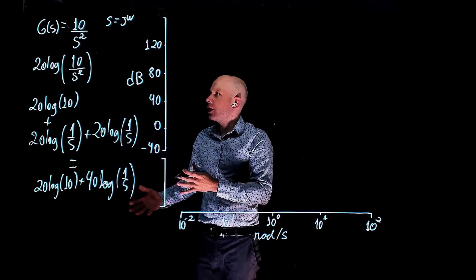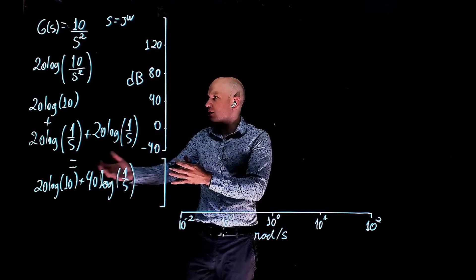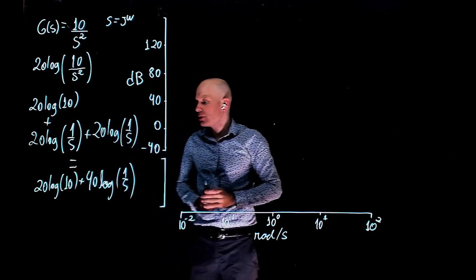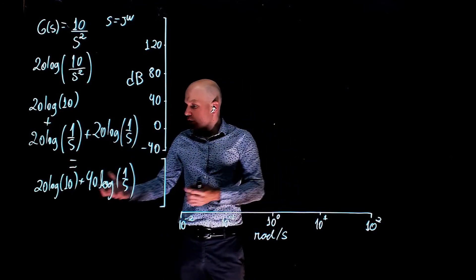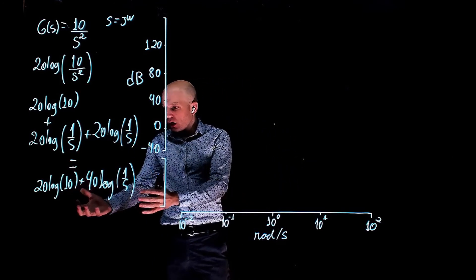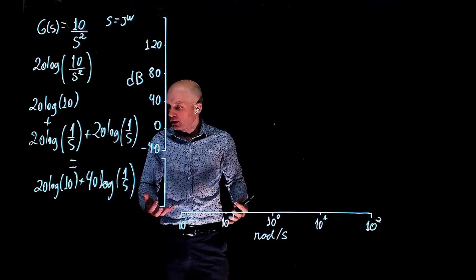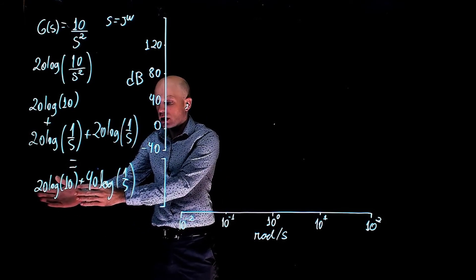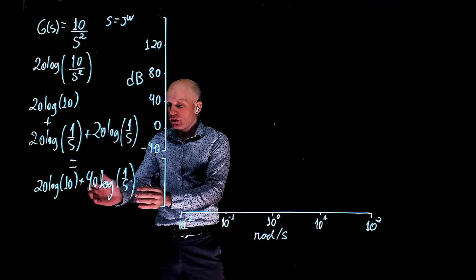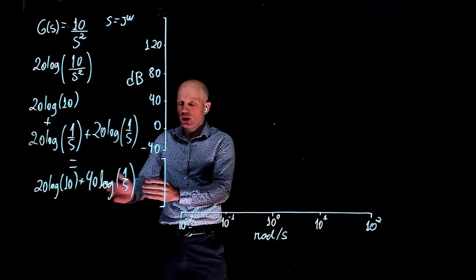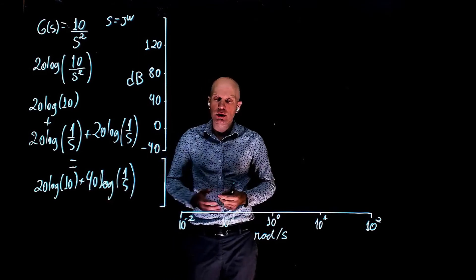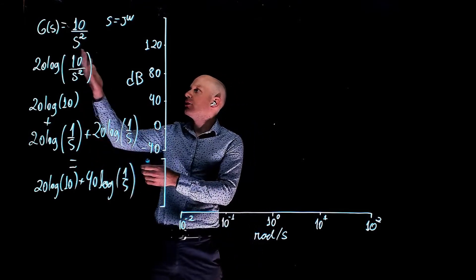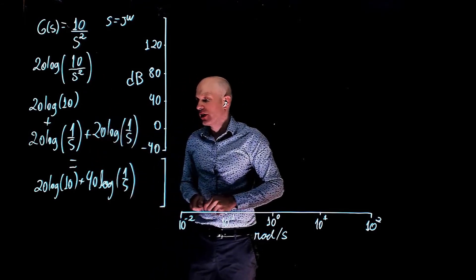Because of this log property that we can split this multiplication into sums, we can now use these building blocks to start the Bode plot: first represent the Bode plot of a constant gain, then take the Bode plot of 1 over s — a pole at the origin — and simply add them together to get the Bode plot of g of s.